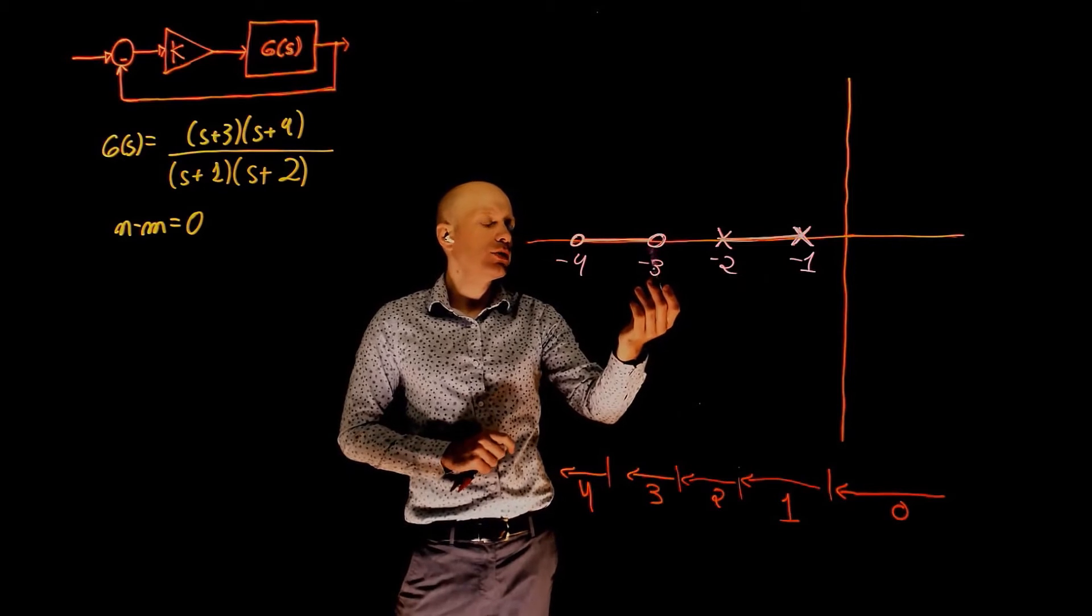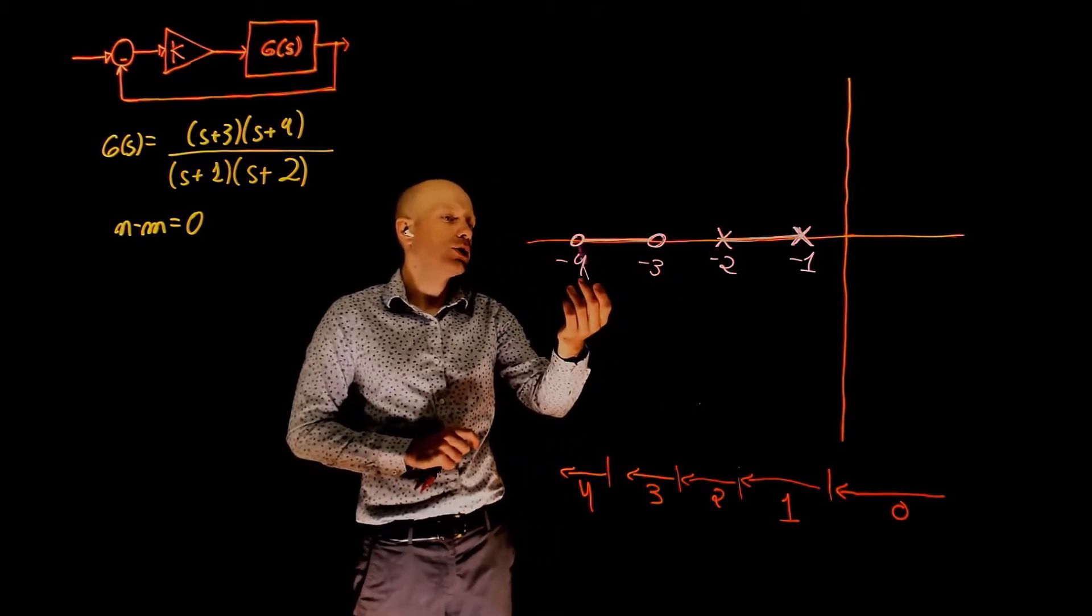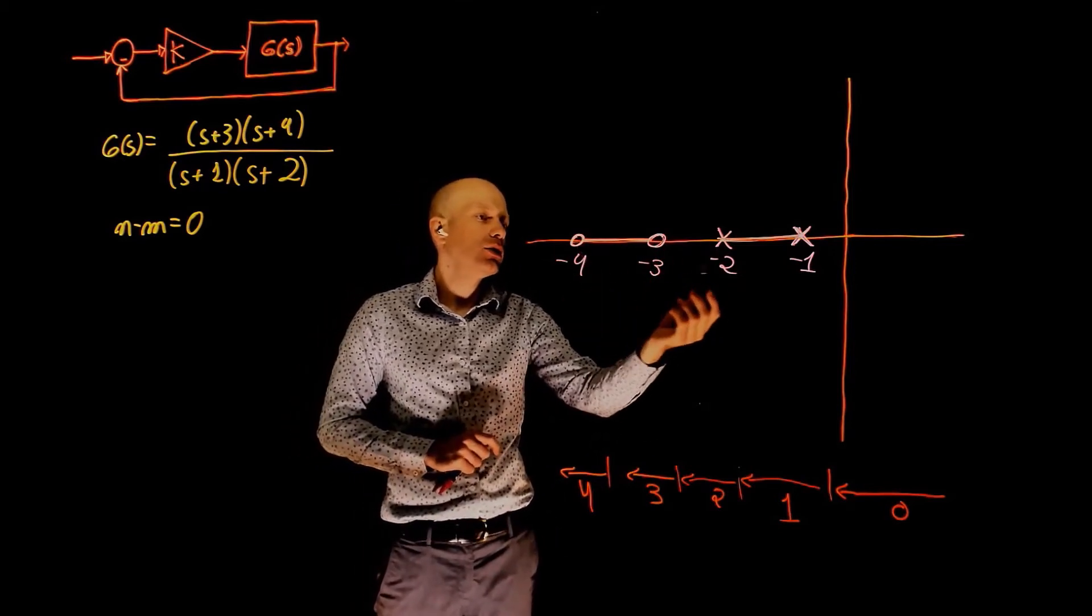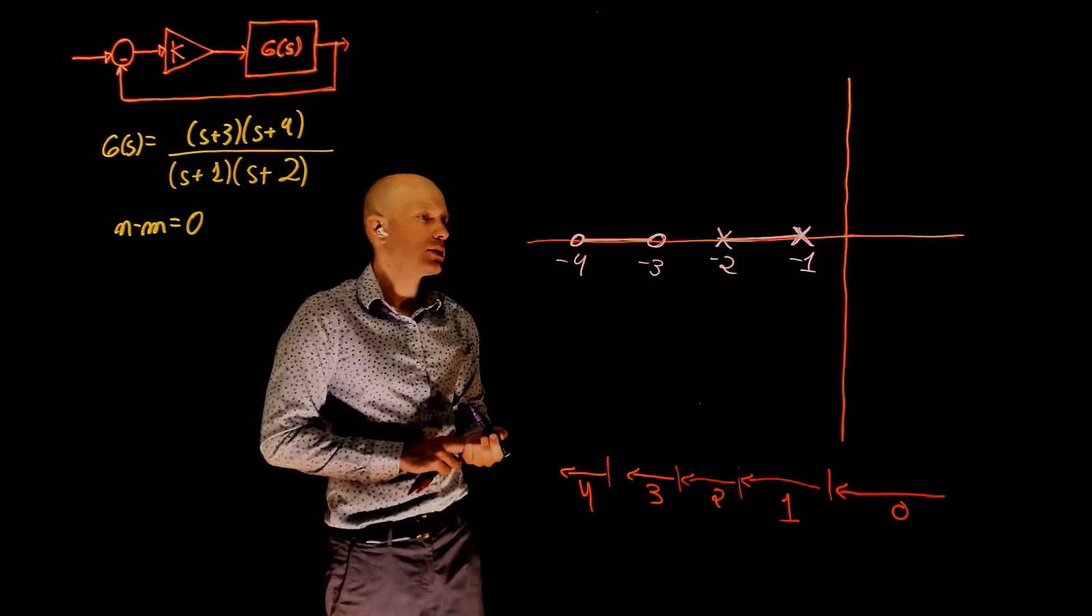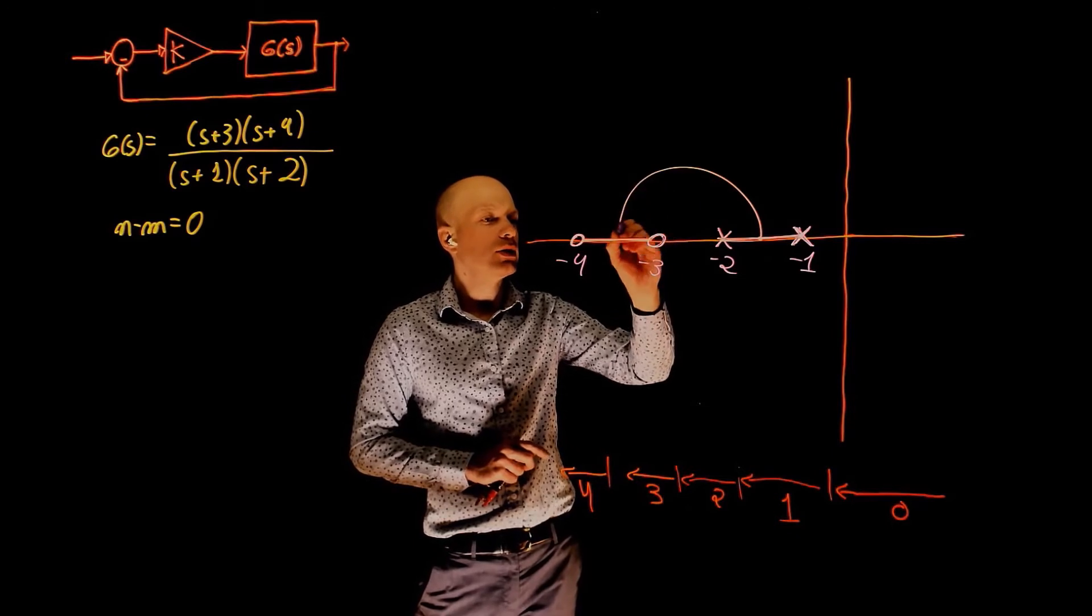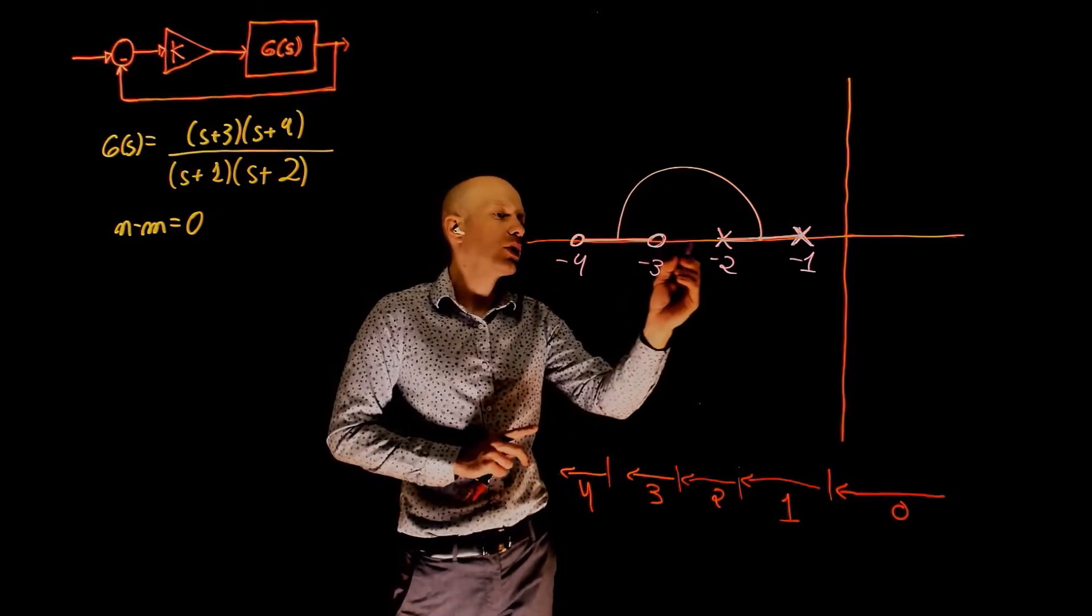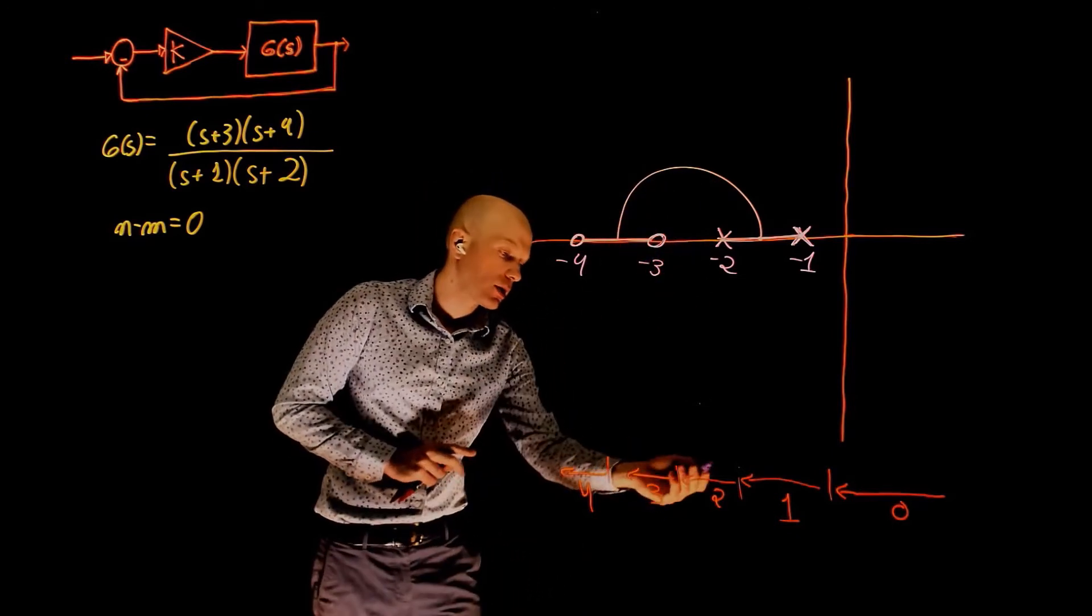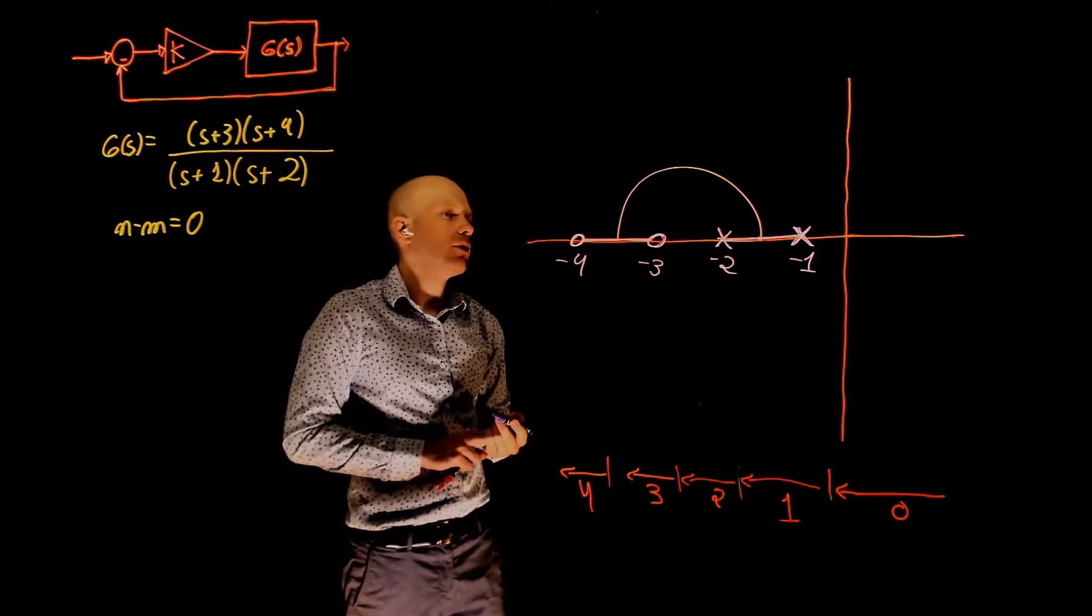Because this pole needs to go to one of the zeros and this pole needs to go to the other one, and there is nothing here in this part of the real axis, these poles will have to break away at one point and somehow migrate to the zeros without crossing this part of the real axis because the count there is an even number.